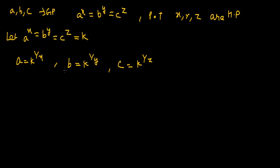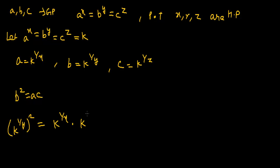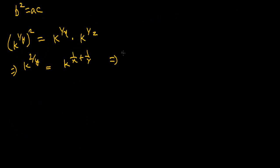Since a, b, c are in GP, we know that b² equals ac. Substituting the values: k to the power 2/y equals k to the power 1/x times k to the power 1/z, which gives k to the power (1/x + 1/z). Since the bases are the same, we can equate the exponents.